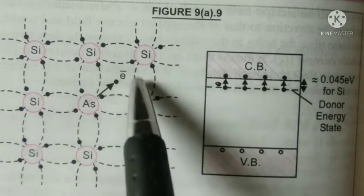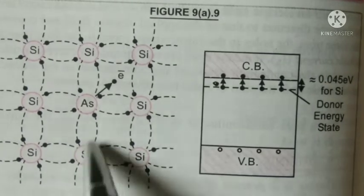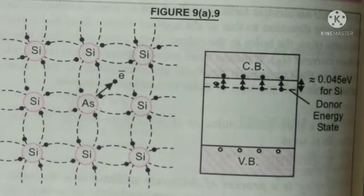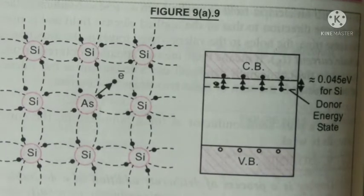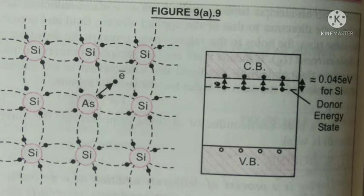On giving fifth electron to the crystal structure, the donor atom becomes positively charged. However, the matter remains electrically neutral as a whole.